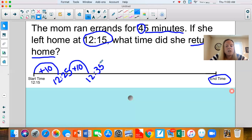Then if we do another 10-minute hop, 12:35 plus 10 would be 12 what? 35, 10 more is 45. Then if we do another 10-minute hop, we're going to be 12:45 plus 10, which would be 12:55.